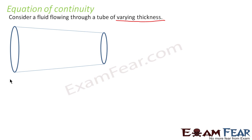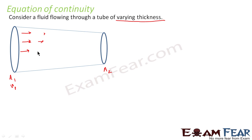Let us say the cross-sectional area at the left end is A1 and the cross-sectional area at the right end is A2. Let us suppose the velocity of the fluid at the left end is V1, and the velocity of the fluid at the right end is V2.